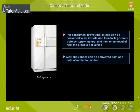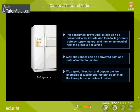Most substances can be converted from one state of matter to another. Wax, gold, silver, iron, and copper are a few examples of substances that can occur in all three phases or states of matter.